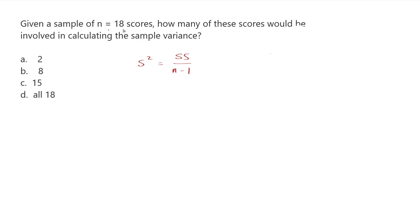Already, in a way, we can see that all 18 scores are involved in finding the sample variance, because if I had one less score, I would only have 17, and that's going to change my result.